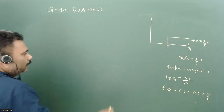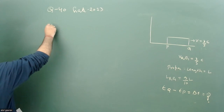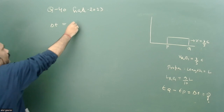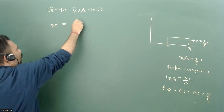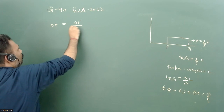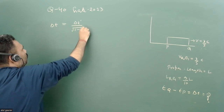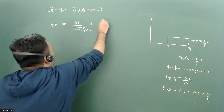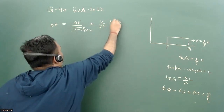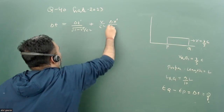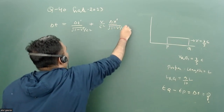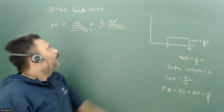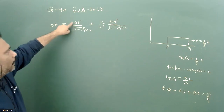We can easily use the Lorentz transformation. Writing it in a simple form: delta t equals delta t' times root of (1 minus v²/c²) plus (v/c²) times delta x' divided by root of (1 minus v²/c²). Here delta x' is l, but we don't know what delta t' is, so we have to calculate it.